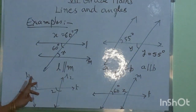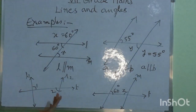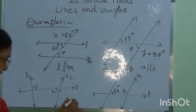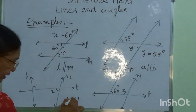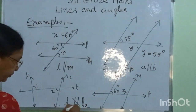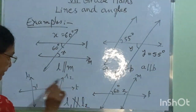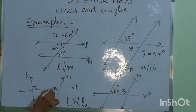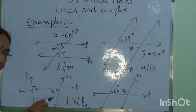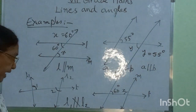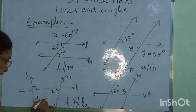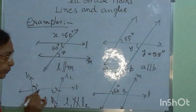Here, L1 and L2 are not parallel to each other. L1 is not parallel to L2. T is a transversal. Angles 1 and 2 are alternate interior angles, but they are not equal. Therefore, angle 1 is not equal to angle 2.